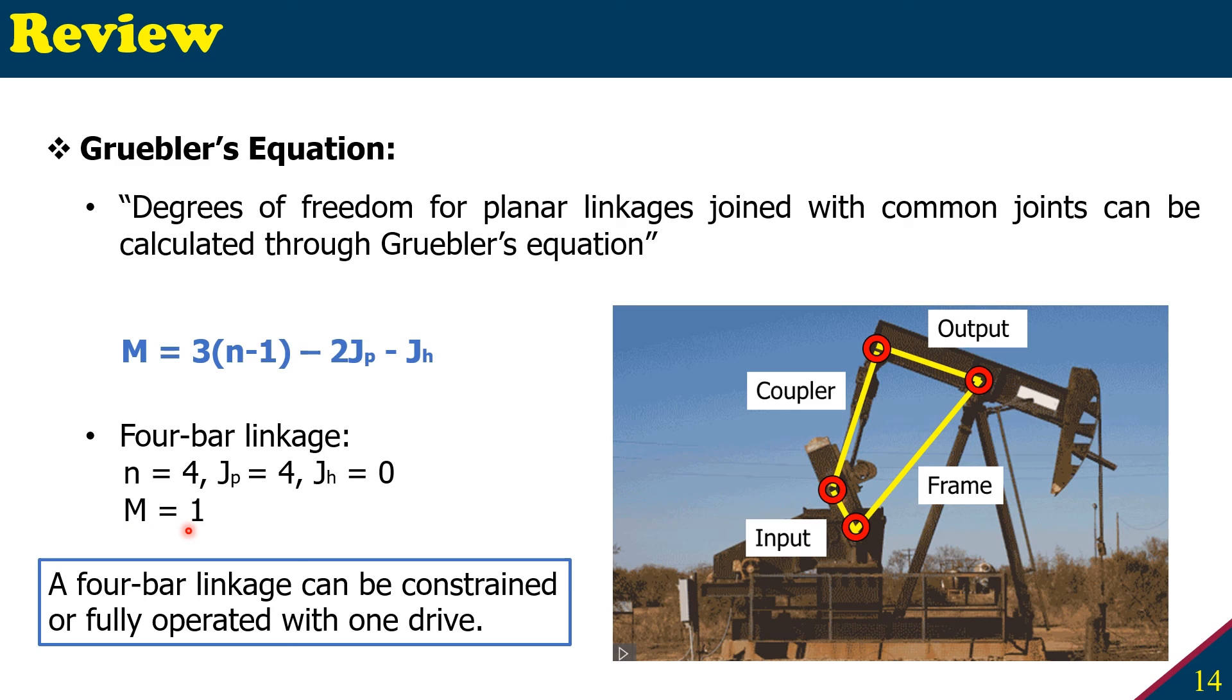M equals 1, meaning this four bar linkage has one degree of freedom. That tells us four bar linkage, if you want to make it fully operational, you just need only one drive, or you can make it a lock mechanism if you constrain only one link. And that's why the M equals 1 is useful to know how much drive we need to fully operate a four bar linkage. And this can also be applied in other linkages.